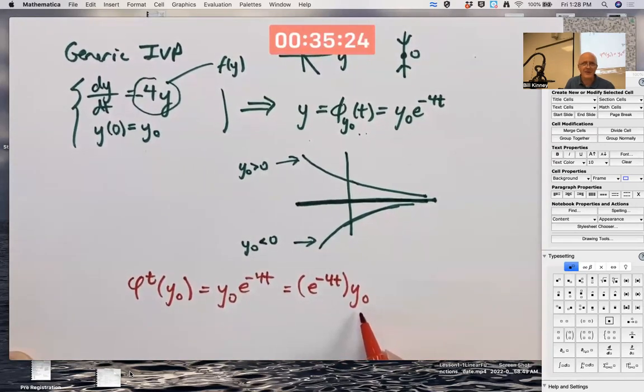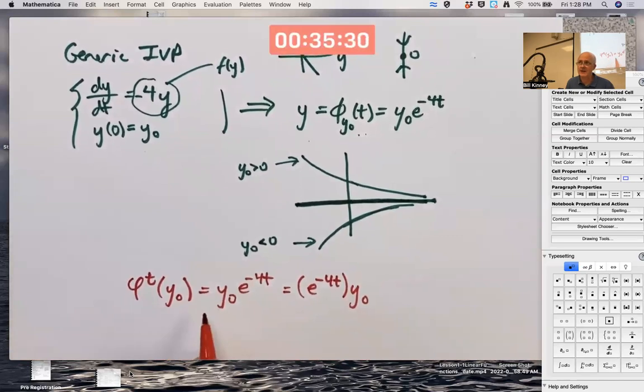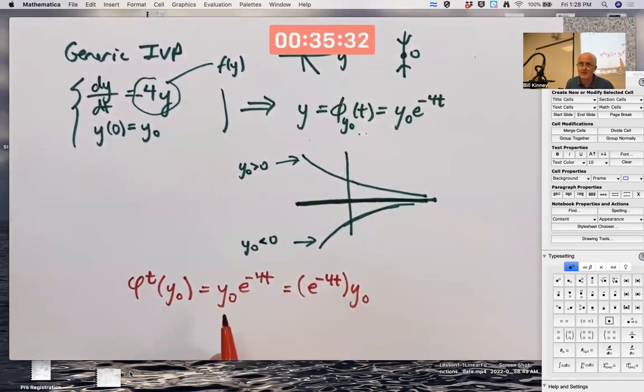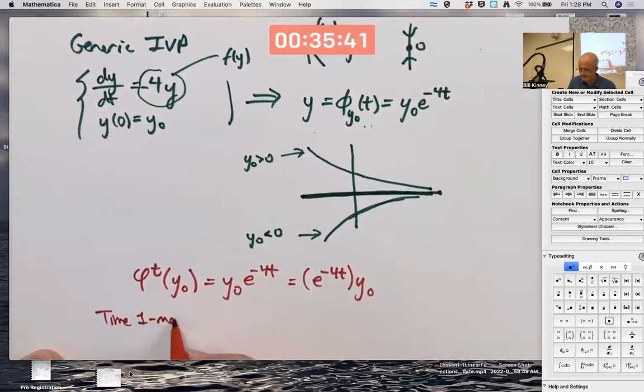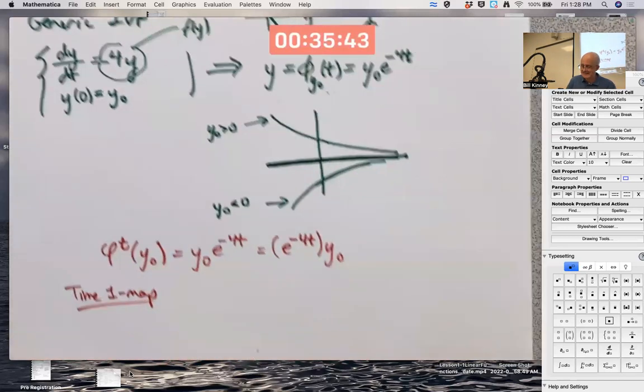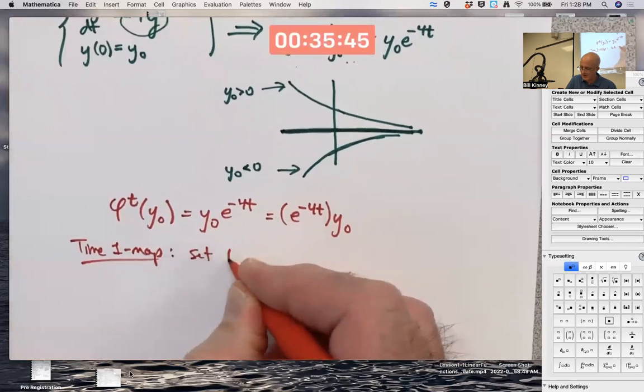Well, why bother? What's the point? I could think of this for lots of different values of t, any value of t that I want. The simplest value of t to think about is when t equals 1. I call that the time 1 map. Set t equal to 1.